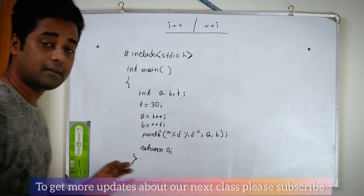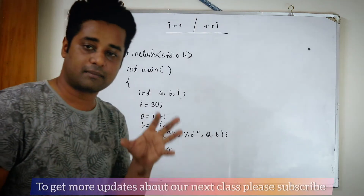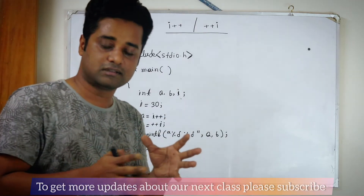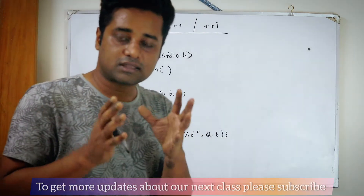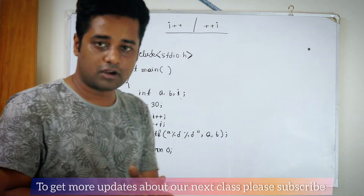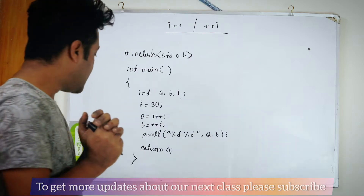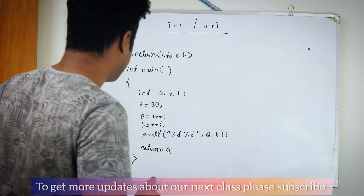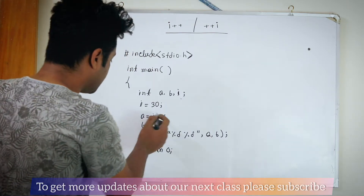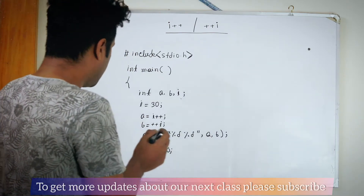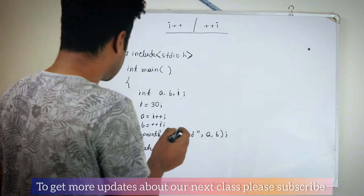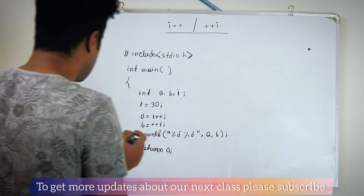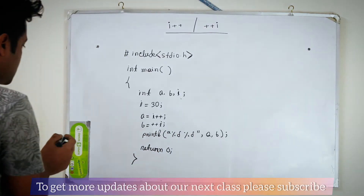So I is initialized. I is 30. What did I write? I write i++.